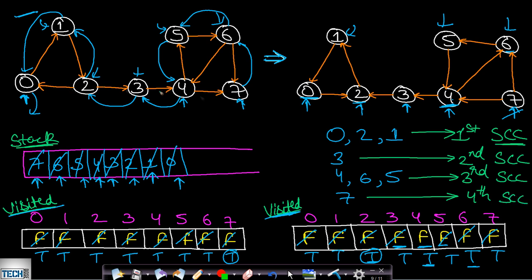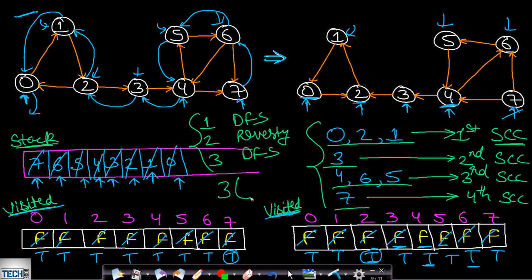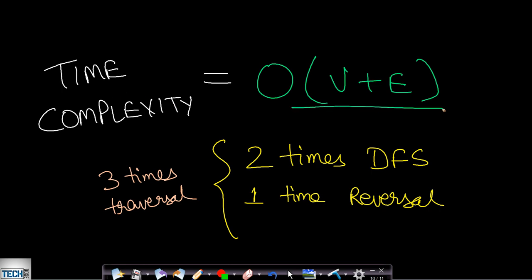This graph has four strongly connected components. The Kosaraju algorithm is a three-step algorithm: the first step is a DFS, the second step is reversing the entire graph (finding the transpose), and the third step is again a DFS. By doing these three steps, we traverse the graph three times, giving a total time complexity of O(3·(V+E)) = O(V+E).